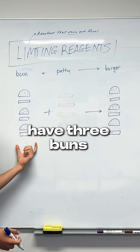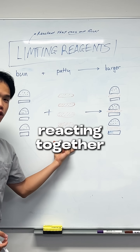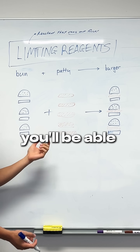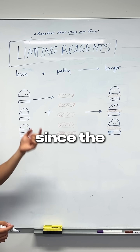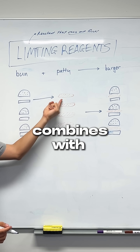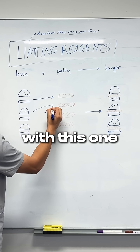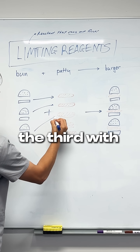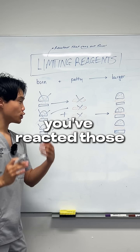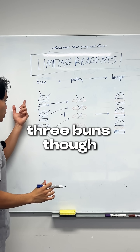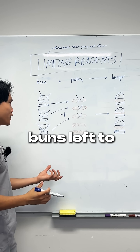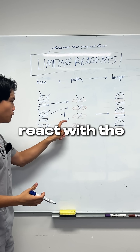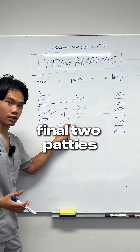Simple. So if you have three buns and five patties reacting together, you'll be able to form three burgers overall. The first bun combines with this patty, the second with this one, the third with that one. Once you've reacted those three buns, you've run out — you have no more buns left to react with the final two patties.